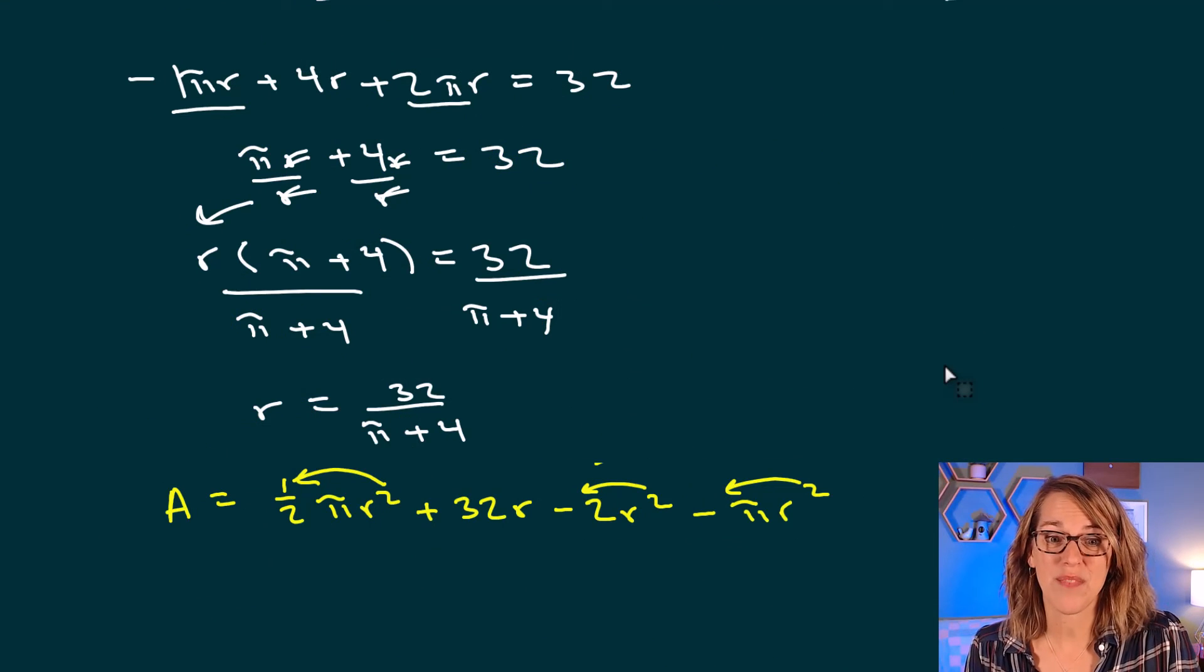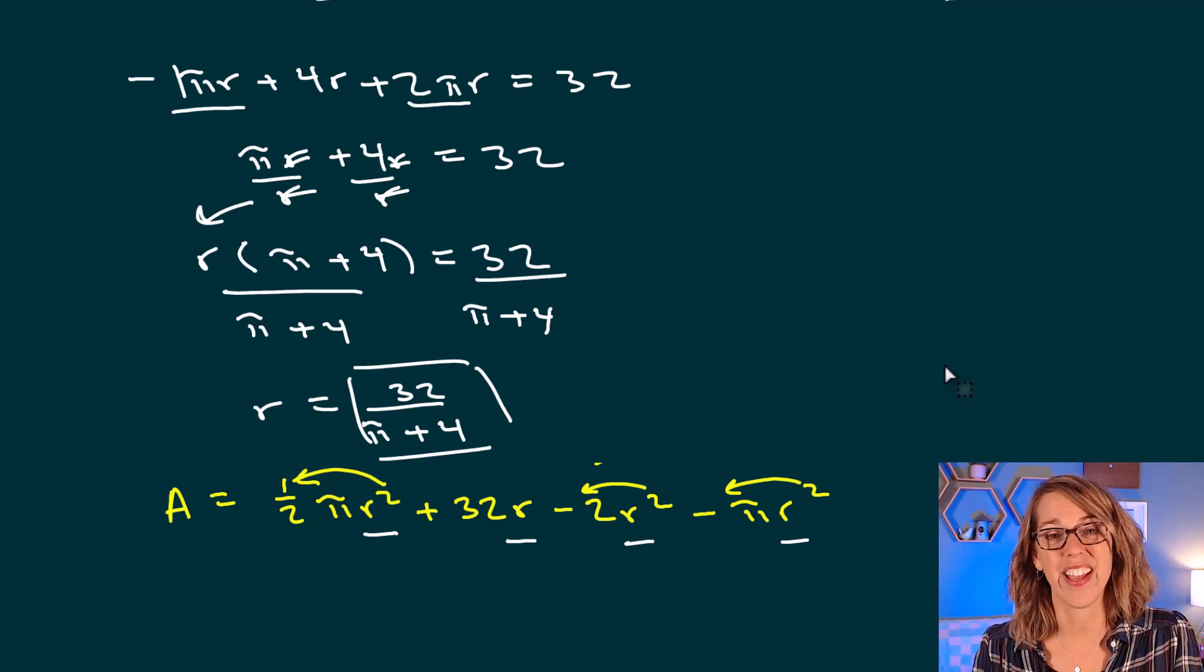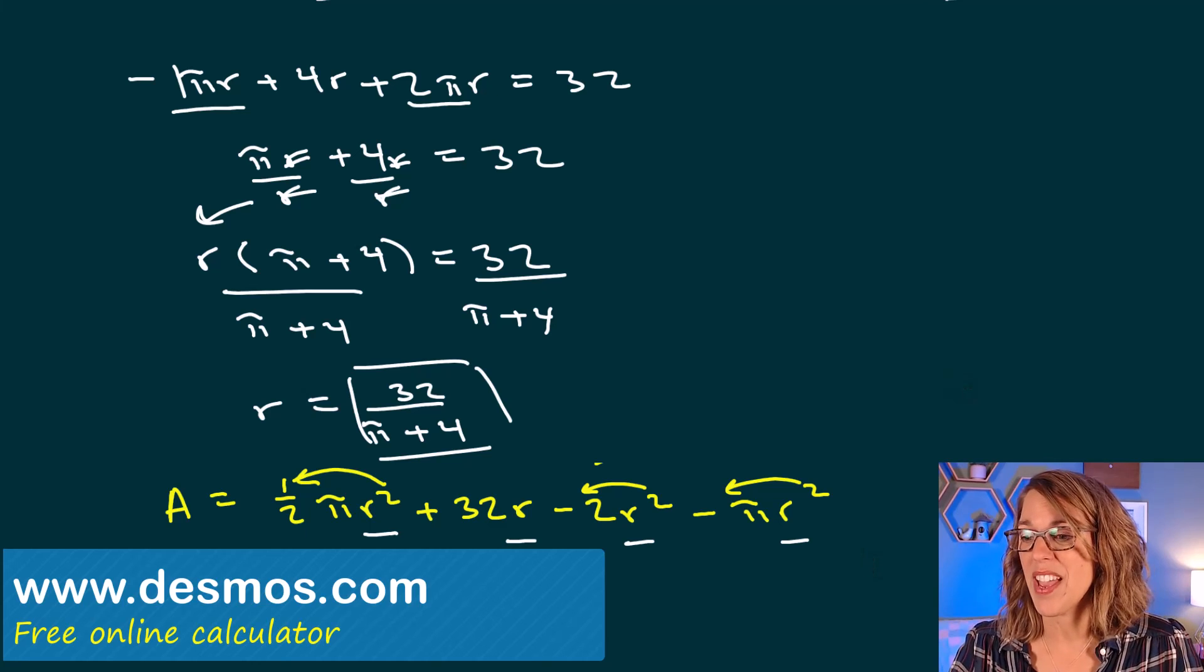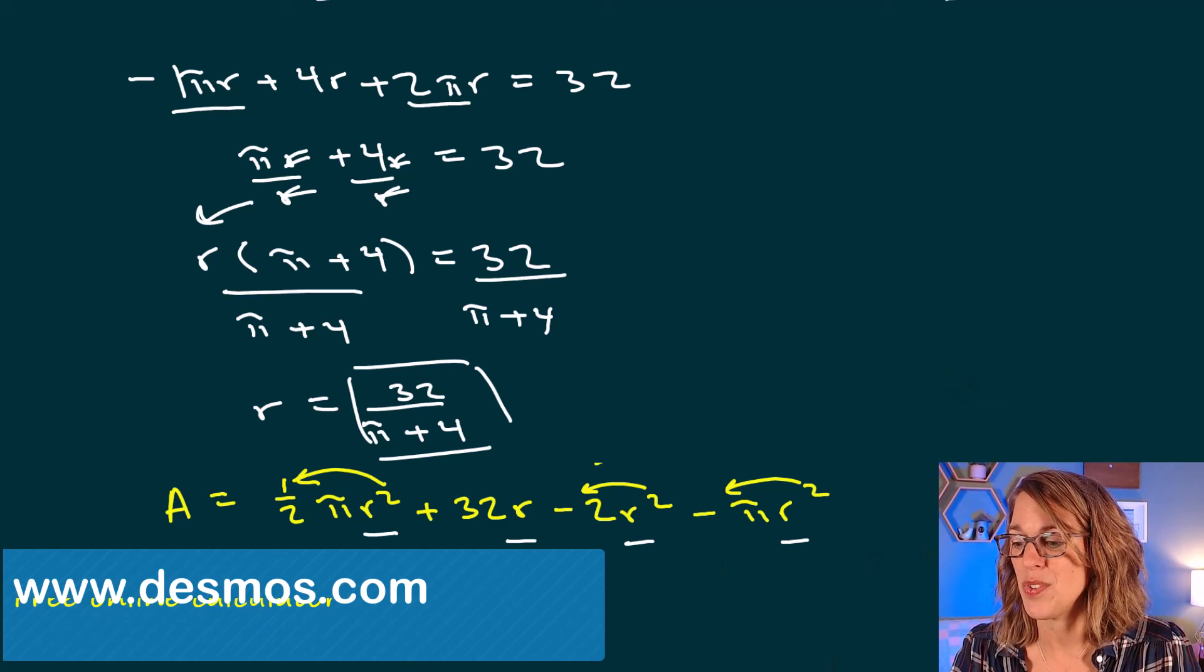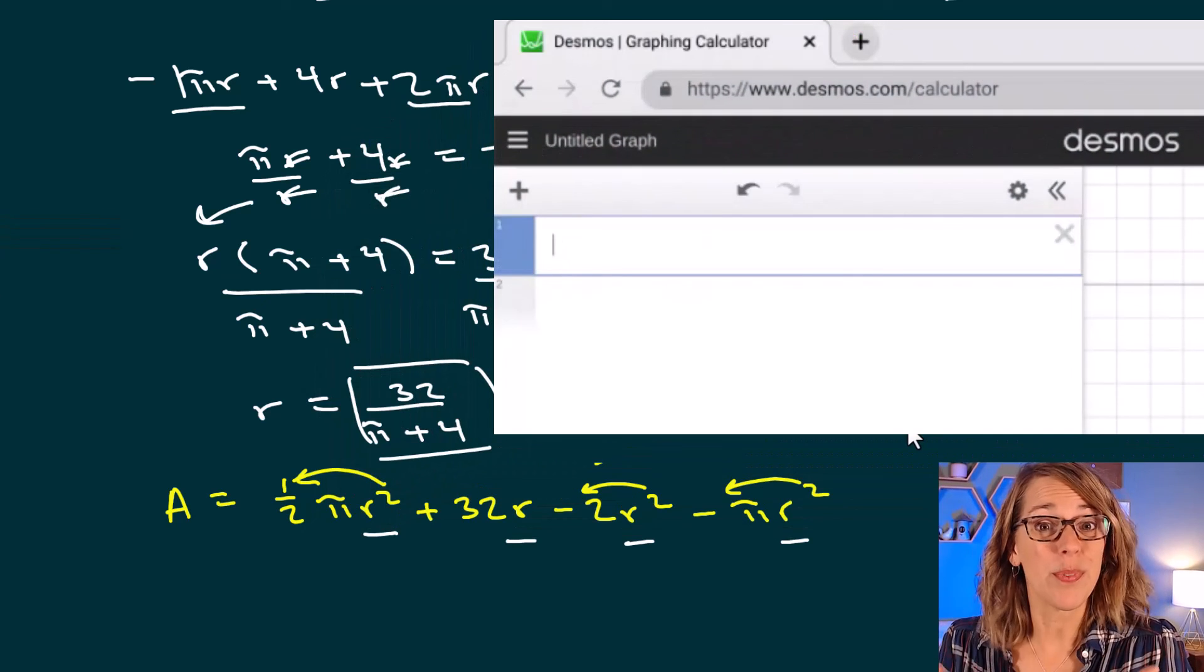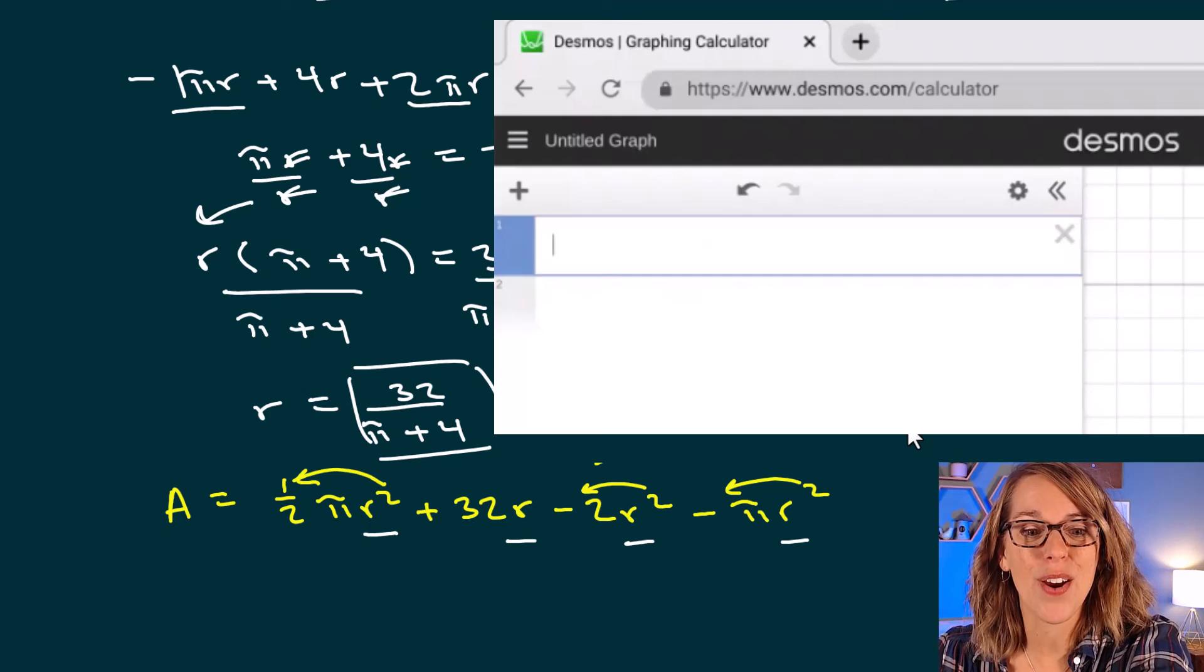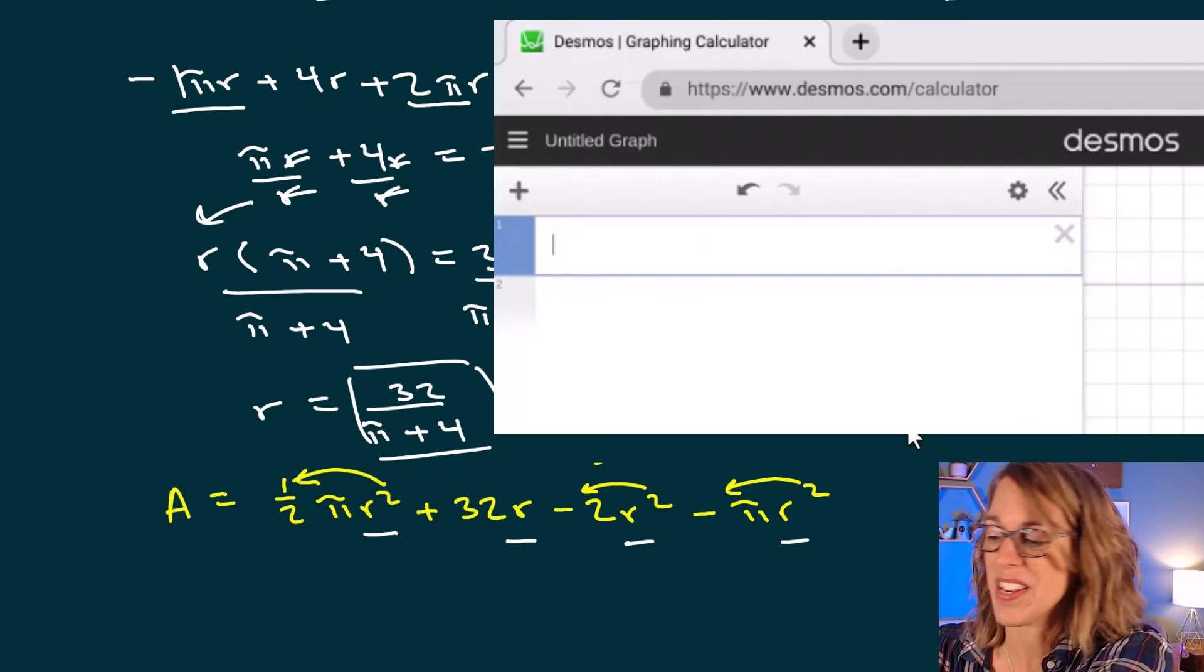So I want to put the value of my radius in wherever I see an r in this equation. Now I could certainly do this with a calculator, but Desmos makes really quick work of that. Let me go ahead and move over into Desmos, and let's put this guy in. Desmos makes really easy work of evaluating this. I'm going to go ahead and type in a of r for my area, and then I'm going to type in the value.